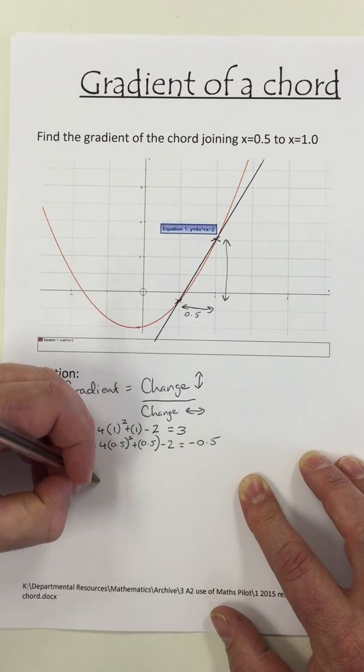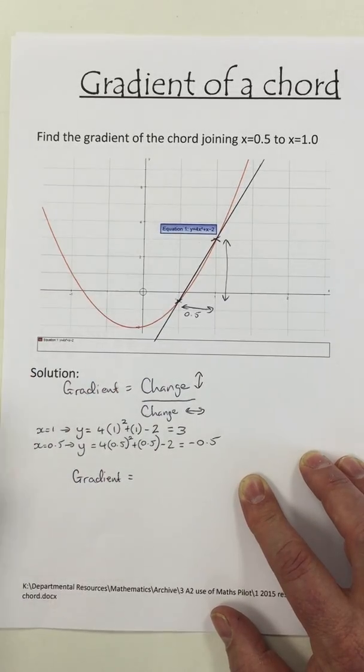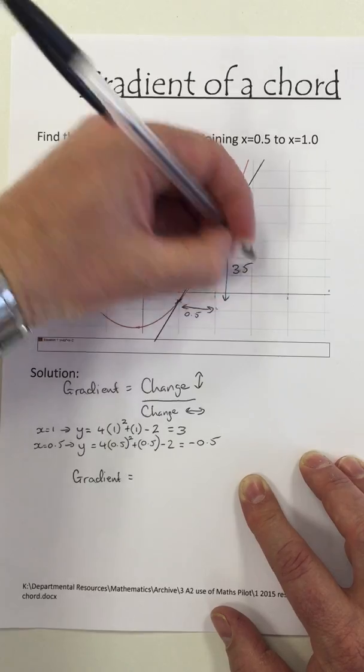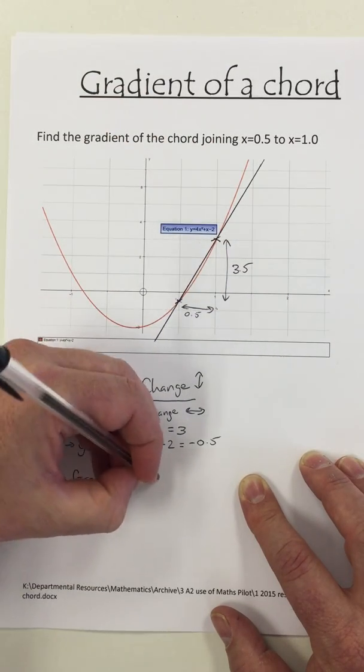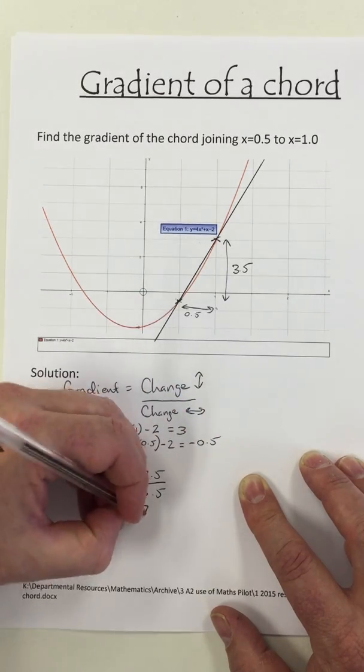So my gradient is, so the difference between minus a half and 3 is 3 and a half. So my gradient is 3 and a half divided by a half, which is 7.